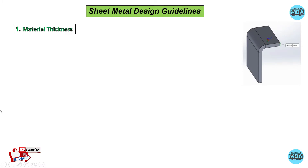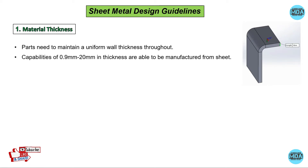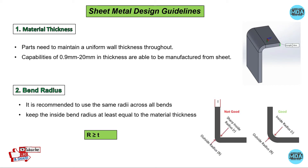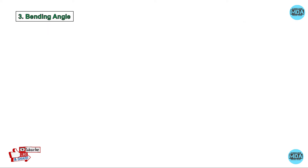The first design guideline is material thickness — we require uniform wall thickness throughout the sheet. For bending radius, the bending radius must be greater than or equal to the material thickness, and it is recommended to use the same radius across all bends.